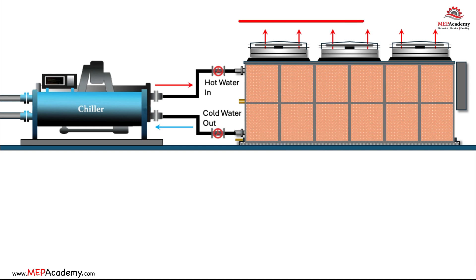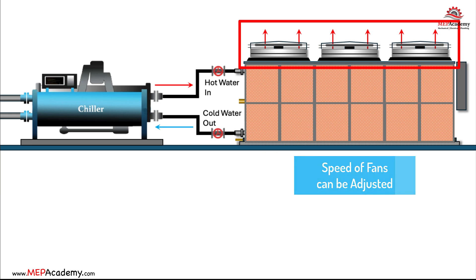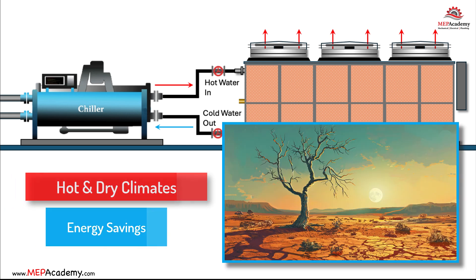The fans inside the adiabatic fluid cooler draw air through the wetted medium and across the heat exchanger to facilitate the cooling process. The speed of the fans can be adjusted to control the cooling capacity of the unit. By combining evaporative cooling with a traditional heat exchanger, adiabatic fluid coolers can achieve significant energy savings compared to conventional air-cooled heat exchangers, especially in hot and dry climates where evaporative cooling is particularly effective.